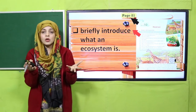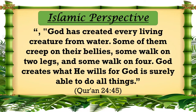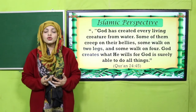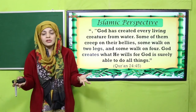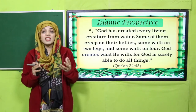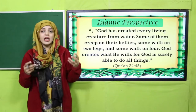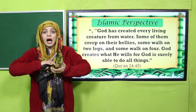From the Islamic perspective: God has created living creatures from water — some of them creep on their bellies, some walk on two legs, and some walk on four. God creates what He wills, for God is surely able to do all things. Just as Allah has created all these different animals, similarly in an ecosystem, different animals and plants are created and connected with each other.